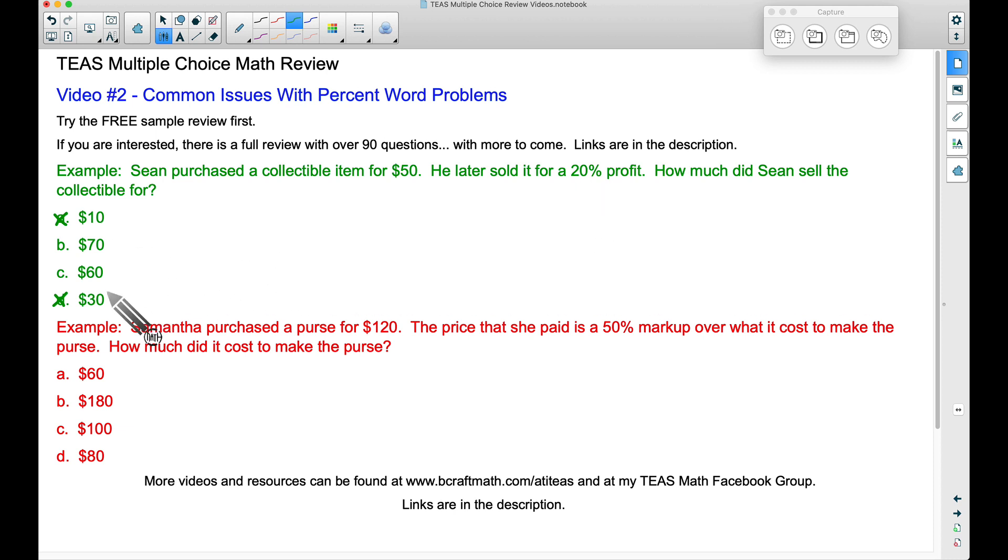Some of you may actually end up picking one of these answers and I'll explain that right here in a second. Now the quickest way to do this is to find 20% of the $50.